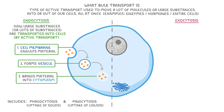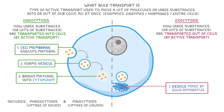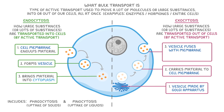Exocytosis, on the other hand, is how large substances or lots of substances are transported out of cells by active transport. During this process, a vesicle, which is often made by the Golgi apparatus, carries the material to the cell membrane. The vesicle then fuses with the membrane and releases the material outside the cell.